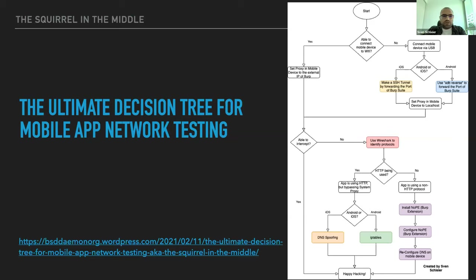What I'll be talking about today is the ultimate decision tree for mobile app network testing. Earlier this year I wanted to make a brain dump of things that were happening to me when I was trying to set up a mobile app test. Many times during mobile app pentesting there were edge cases and tricky things I needed to solve, and I wanted to summarize and share everything.